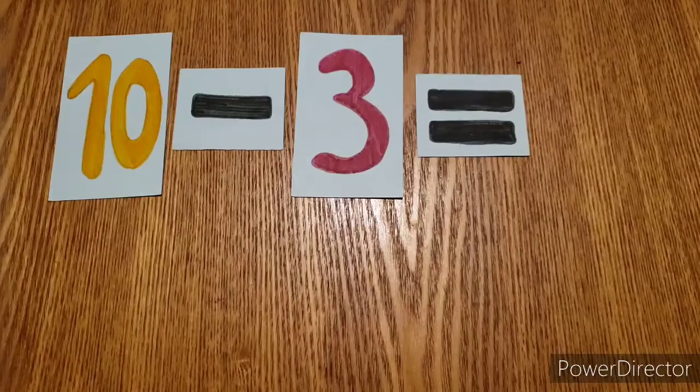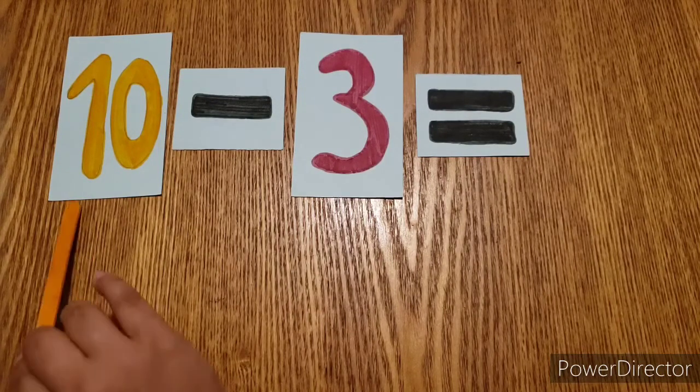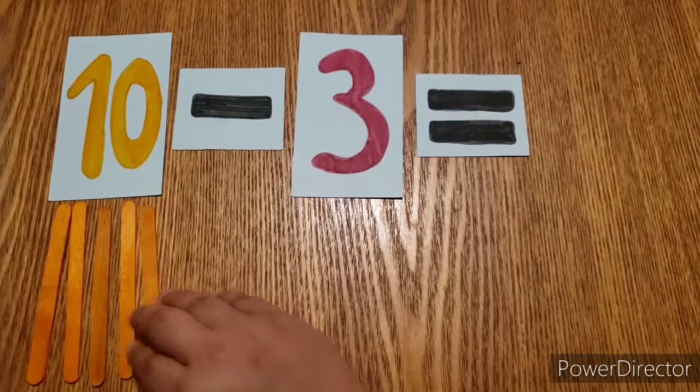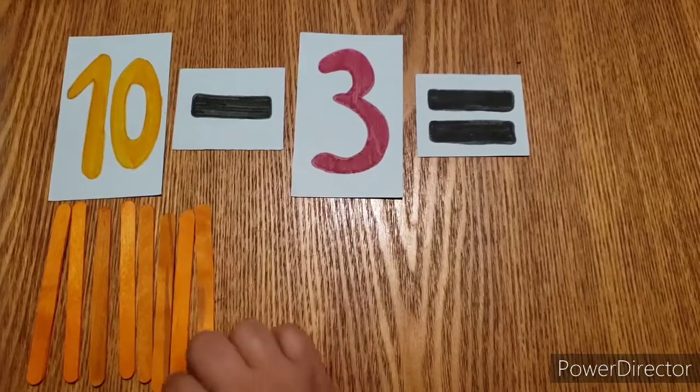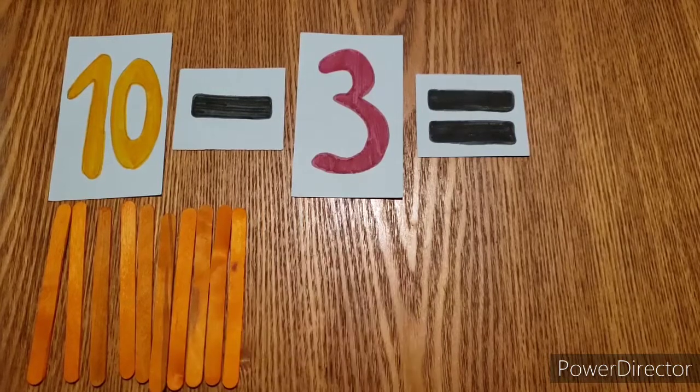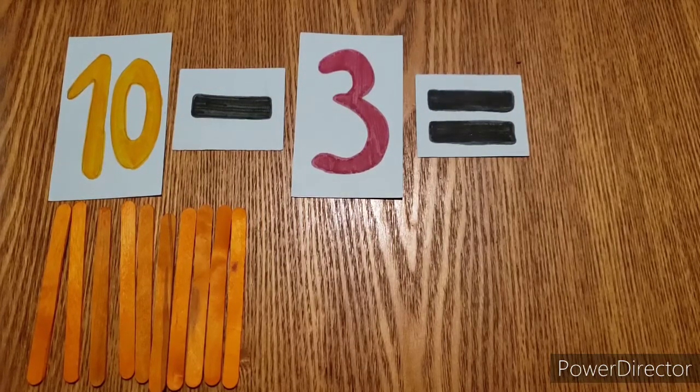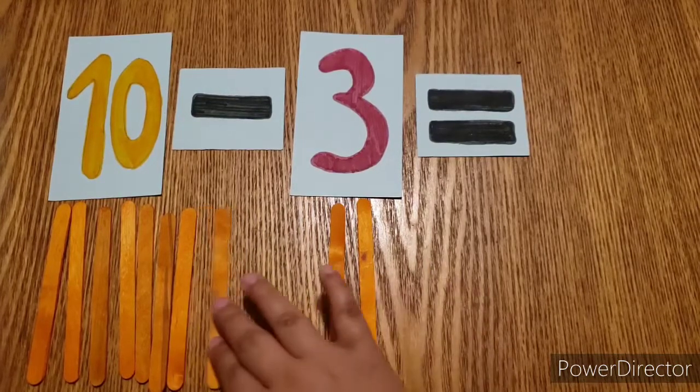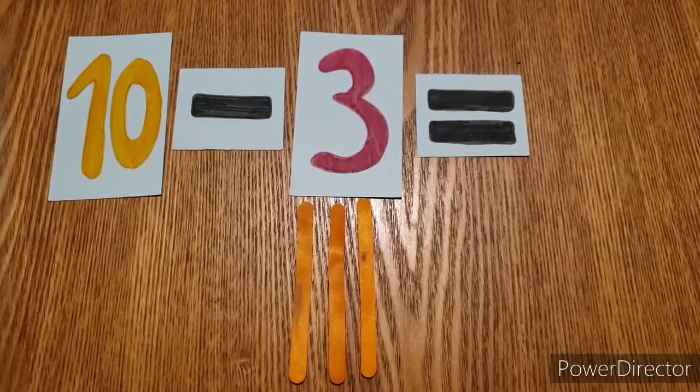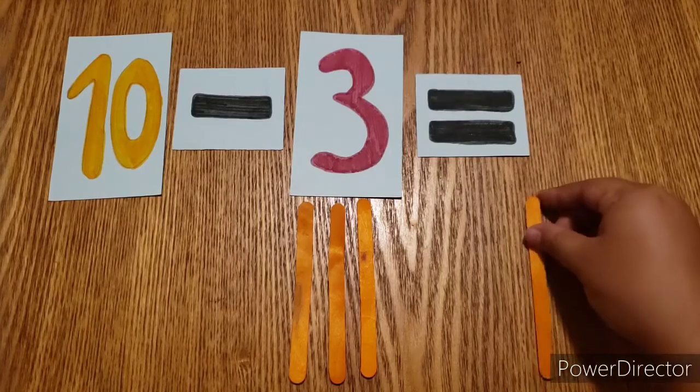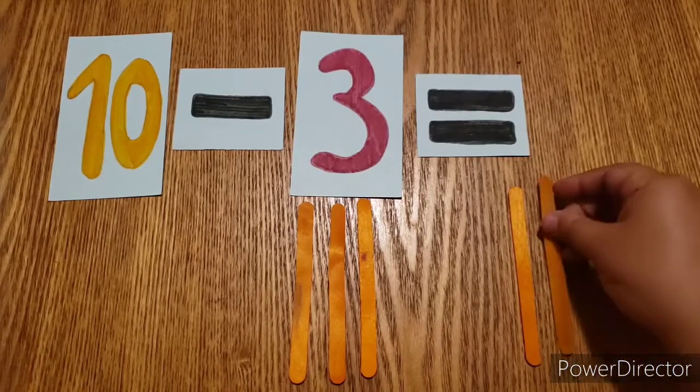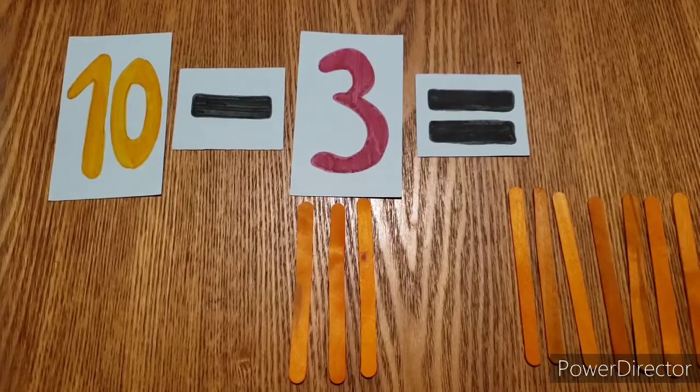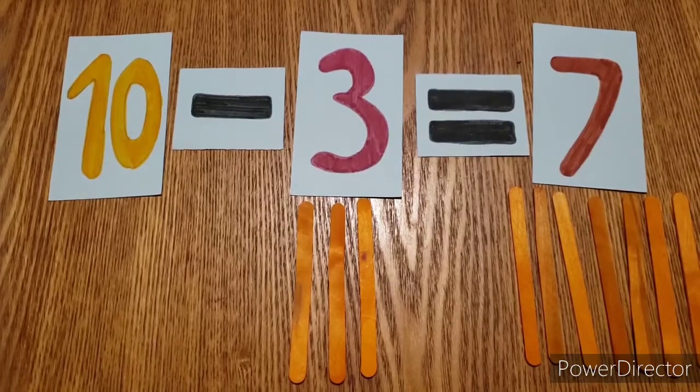Let's look at this last problem. We have 10 minus 3. So let's get 10 popsicle sticks: 1, 2, 3, 4, 5, 6, 7, 8, 9, and 10. Now we want to subtract 3. So again when we say subtract we want to take away. So let's take away 3 popsicle sticks: 1, 2, and 3. Now we want to see how many we have left over. And that would be the answer. So we have 1, 2, 3, 4, 5, 6, and 7. So the answer is 7. 10 minus 3 equals 7.